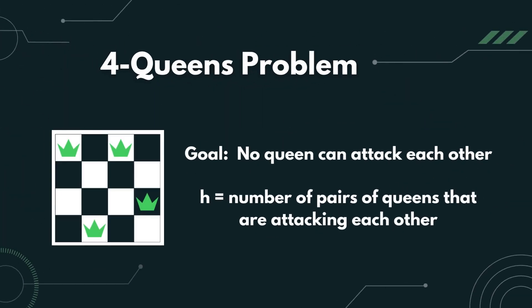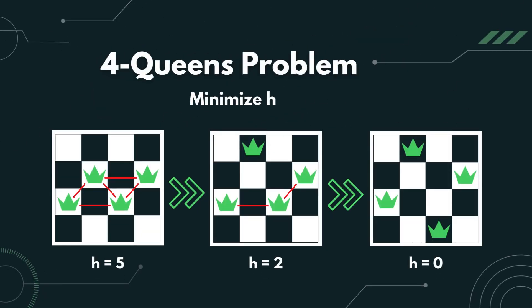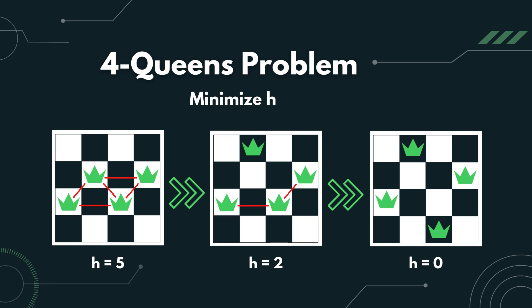One problem where this search technique can be applied is the four queens problem. The goal is that no queen can attack each other. The heuristic value H is the number of pairs of queens that are attacking each other. In the example shown, H is currently 5, which means there are 5 pairs of queens attacking each other. If one queen is moved upwards, H becomes 2. And if another queen is moved downwards, H becomes 0, which means we have achieved our goal of no queen attacking each other.